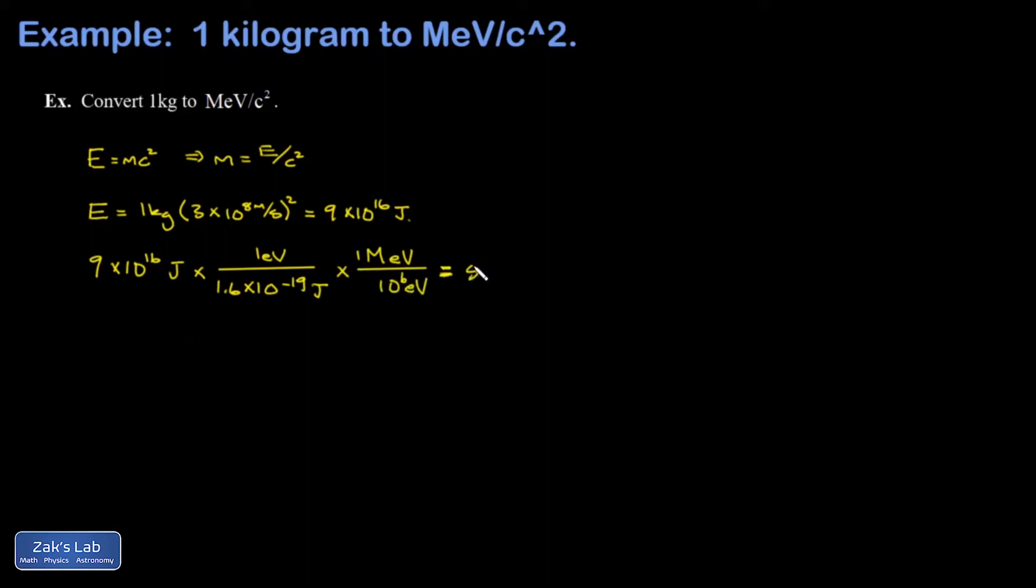We find that our energy equivalence of a one kilogram mass is 5.625 times 10 to the 29th mega electron volts. Finally, we go back to E equals mc squared solved for m, and we can express our mass of one kilogram as its energy equivalent: 5.625 times 10 to the 29th mega electron volts divided by c squared. We've got the mass of one kilogram written in MeV per c squared.